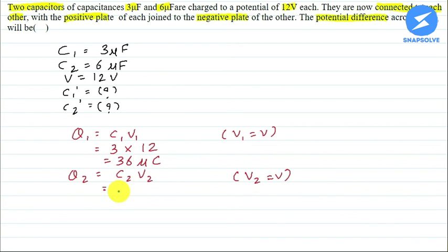We will be similar for Q2 as well. Microfarad into V2 is 12, so 72 microcoulomb.